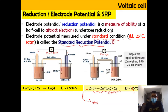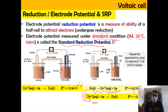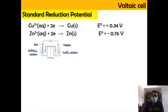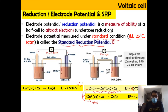We change everything into reduction because we are building a series of standard reduction potentials. Everything listed in the table is expressed as a reduction process, so we need all values in that form. This way we can make a consistent list of standard reduction potentials at 25°C.